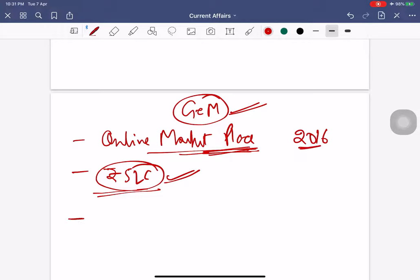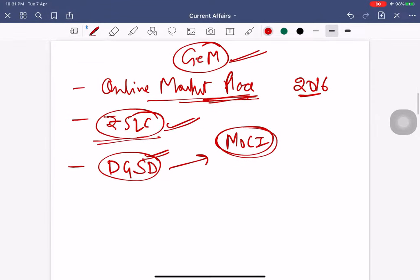The organization is the Directorate General of Supplies and Disposal, DGSD, which is an organization under the Ministry of Commerce and Industry. This is the nodal organization for hosting the GeM portal.